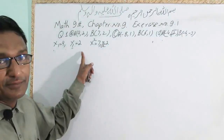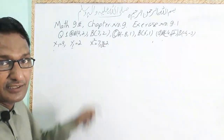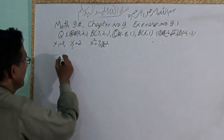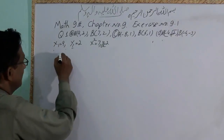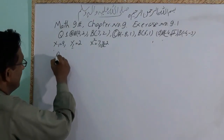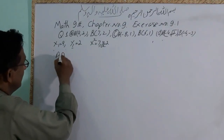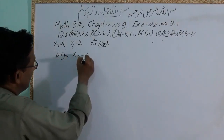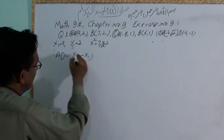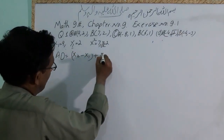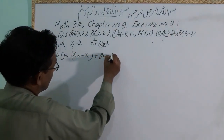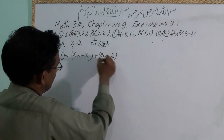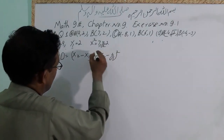I will just add the distance formula. D is equal to square root of (x2 minus x1) squared plus (y2 minus y1) squared.